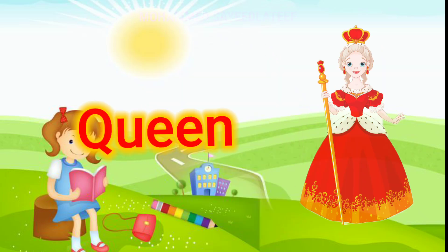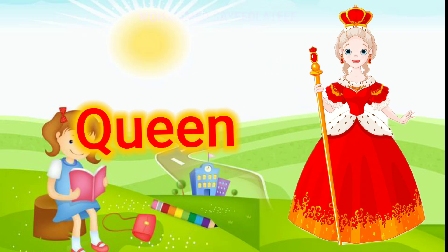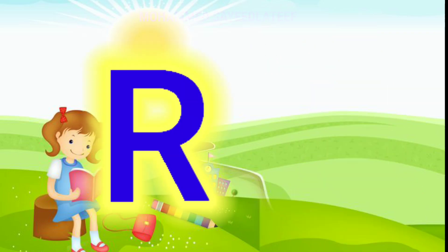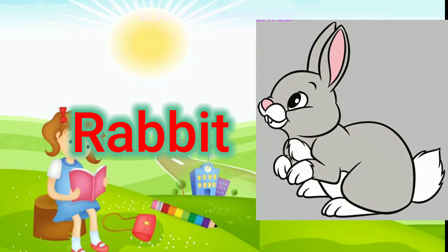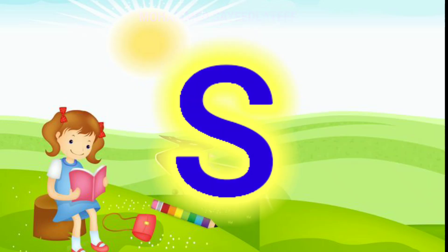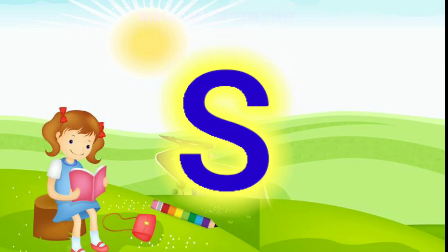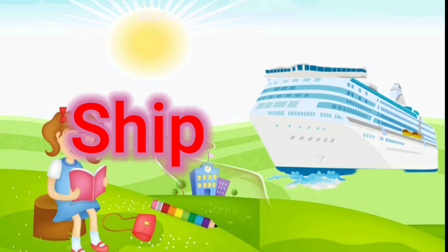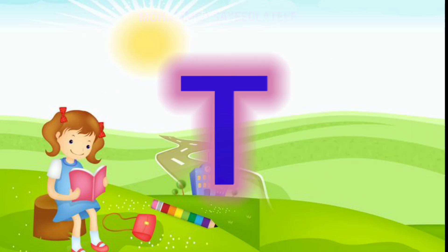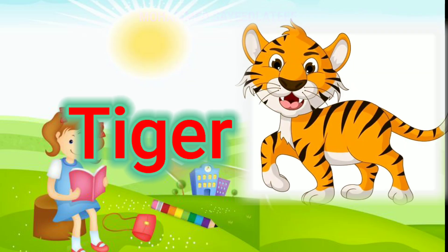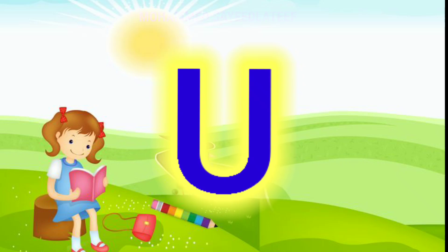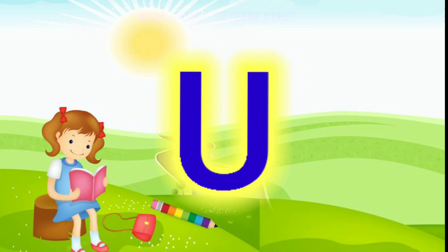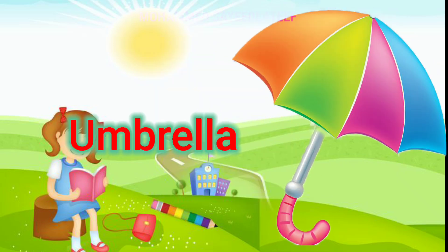Q for a queen, R for rabbit, S for sheep, T for tiger, U for umbrella.